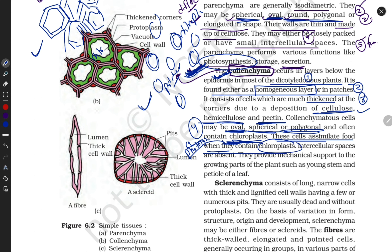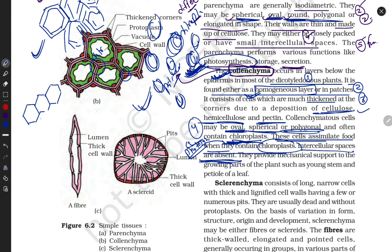If collenchyma cells are arranged in a homogeneous layer and contain chloroplasts, they can perform photosynthesis and store food. If they are in patches form without chloroplasts, they don't contribute to photosynthesis. So photosynthesis in collenchyma is conditional. Also, intercellular space is absent — the cells are highly compact with no space between them.